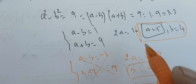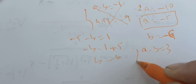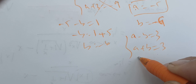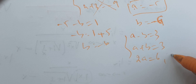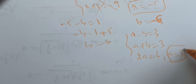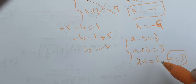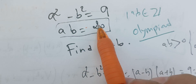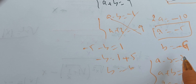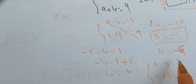Next: if a minus b equals 3 and a plus b equals 3, adding gives 2a equals 6, so a equals 3, and b equals 0. But then a times b equals 0, which is not 20. So this is not a solution either.